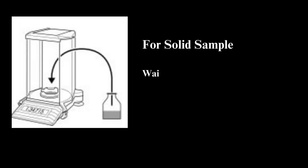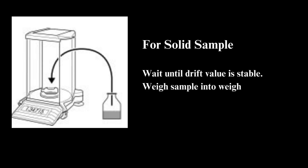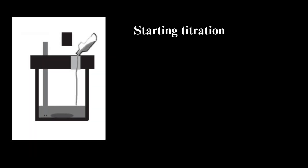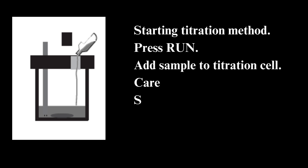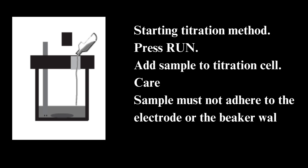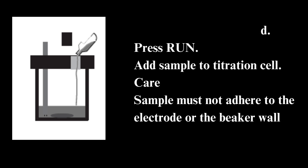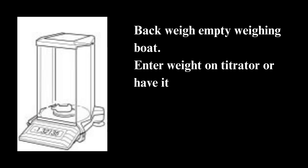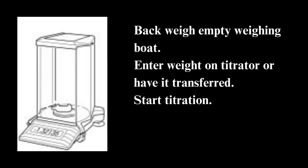For a solid sample: wait until the drift value is stable. Weigh the sample into a weighing boat and tear the balance to zero. Start the titration method and press run. Add the sample to the titration cell — the sample must not adhere to the electrode or the beaker wall. Back-weigh the empty weighing boat, enter the weight on the titrator or have it transferred, then start the titration.